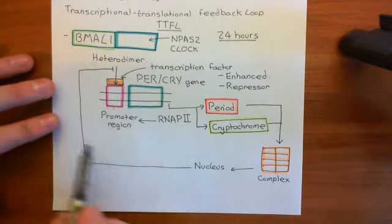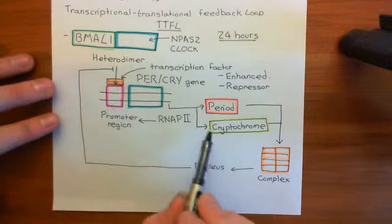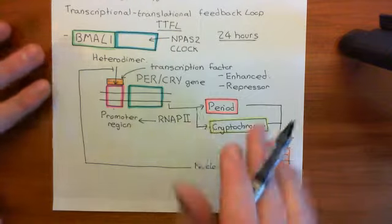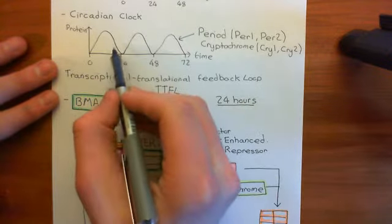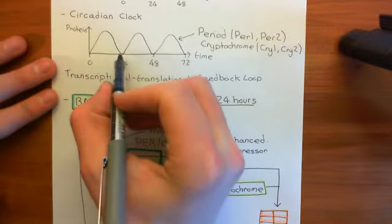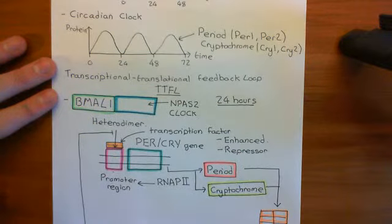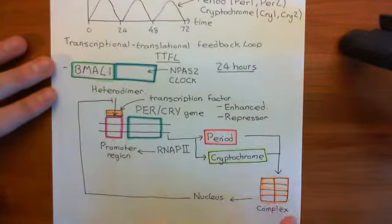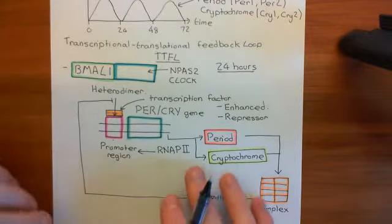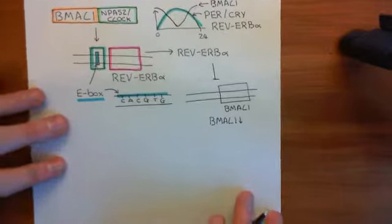When this happens, you're going to stop producing more period and cryptochrome. Meanwhile, period and cryptochrome levels will be going down because they're being broken down. That triggers this down phase of the levels of period and cryptochrome, until BMAL1 bound to NPAS2/CLOCK will no longer be inhibited by these complexes — because they're no longer present — and will therefore start the activation and production of period and cryptochrome again. This cycle takes 24 hours.